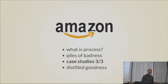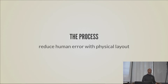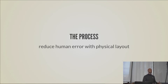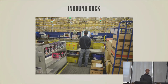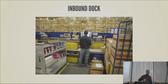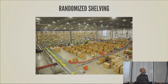Now we're into Amazon — an extremely different process. What they do is reduce human error with a physical layout. People who want to sell on Amazon send items to Amazon warehouses, where they first check for quality — inspecting to see if it got broken in shipping or in the warehouse, because that matters for determining fault. Then they label it and put a unique ID on there.